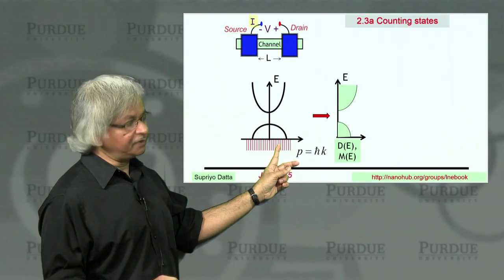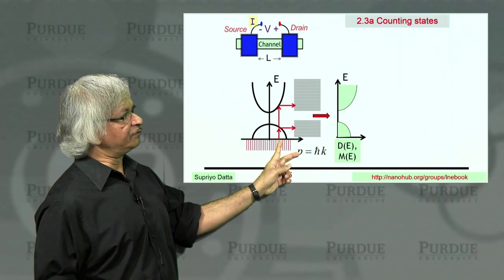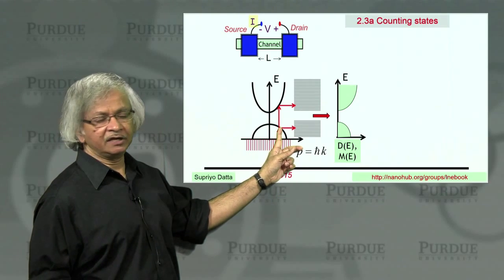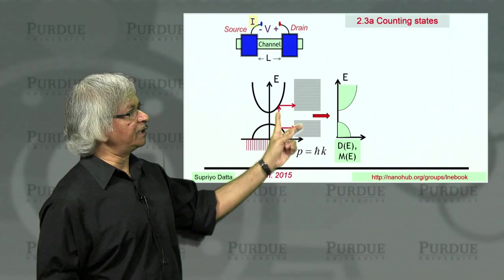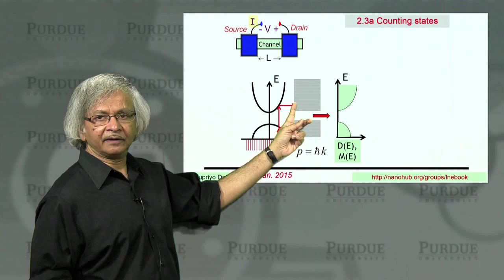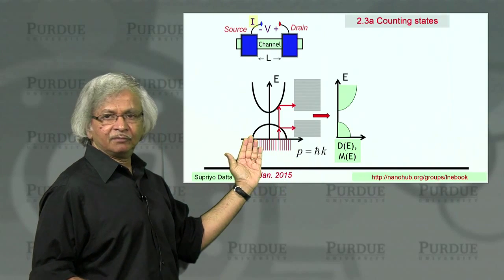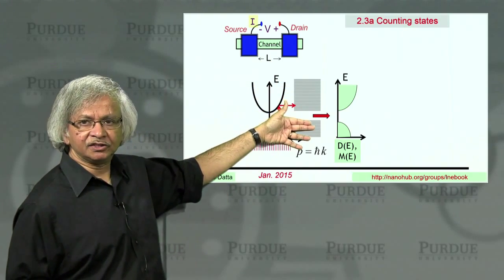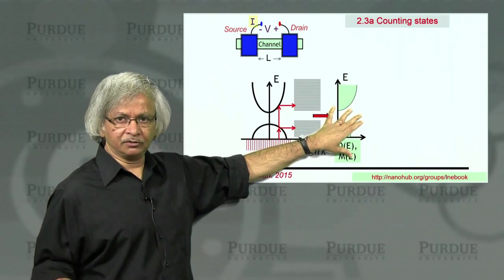Corresponding to each discrete value, of course, there are allowed energies. So if this is one allowed momentum, then there's a corresponding allowed energy here, which gives you an energy level. Similarly, at that momentum, there's another allowed energy level in this band, which will give you an energy right there. So this discrete set of momenta kind of translate into a discrete set of energies, which we then translate into this density of states or number of modes.